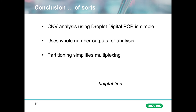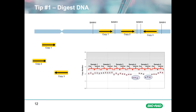Before we go, I would like to share a few helpful hints. Tip number 1: digest your DNA with a restriction enzyme that cuts just outside of your amplification region. This allows any tandem repeat copies to be separated and randomly distributed in droplets. If not digested, these tandem or linked copies end up in the same droplet and are counted as 1 instead of as 2 or 3. Improperly separated tandem repeats result in inaccurate quantification and are often displayed as counts landing between whole integer values.